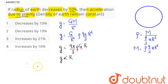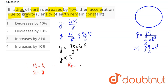Let the initial radius be r and the initial acceleration due to gravity be g. Since the radius decreases by 10 percent, the final radius becomes r minus 10 percent of r, which equals r minus r/10, giving us 9r/10.